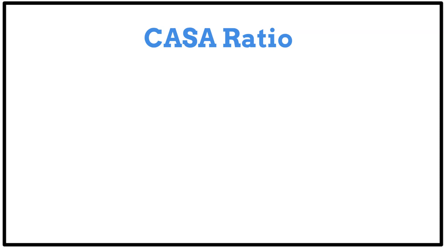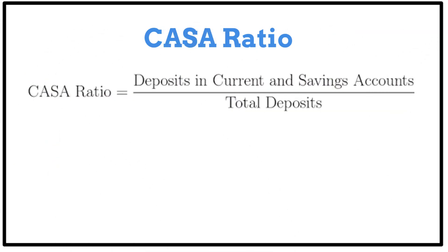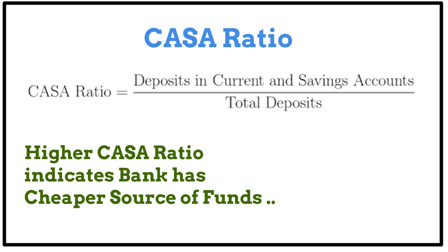The cost ratio, also known as the CASA ratio, is calculated by dividing current and savings account deposits by total deposits. Total deposits include current deposits, saving deposits, fixed deposits, and recurring deposits. If a bank has a higher CASA ratio compared to other banking sector stocks, the bank pays less interest, meaning the source of funds is very cheap.